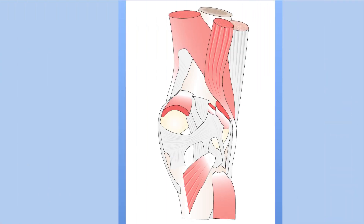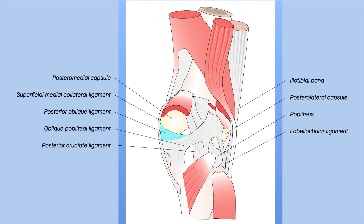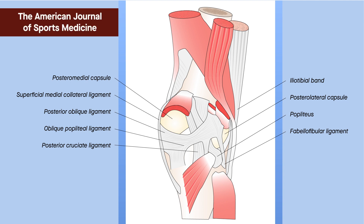One reason why is that it is currently unclear which structures in the knee contribute most to hyperextension, or rather, which structures work hardest to prevent it. A new study published in the American Journal of Sports Medicine suggests that while no single compartment serves as a primary restraint to hyperextension, the postural medial and postural lateral capsular structures provide major resistance, with the cruciate ligaments also providing some but less resistance.